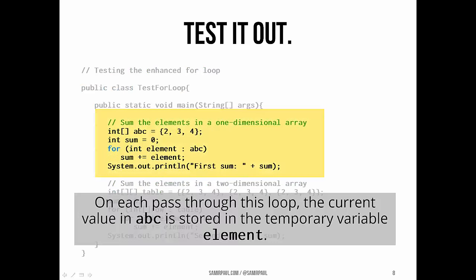Just again, the key thing to note, every time we pass through the loop, the current value in abc is stored in whatever temporary variable we declare inside the enhanced for loop. That's what we're doing instead of indexing.